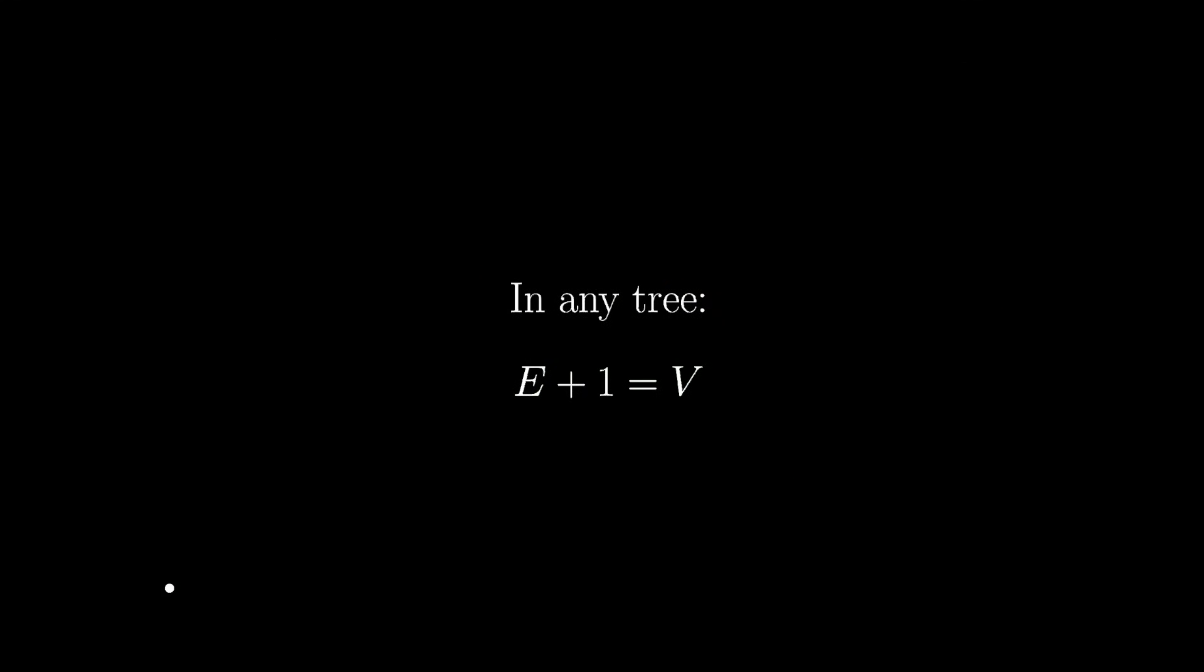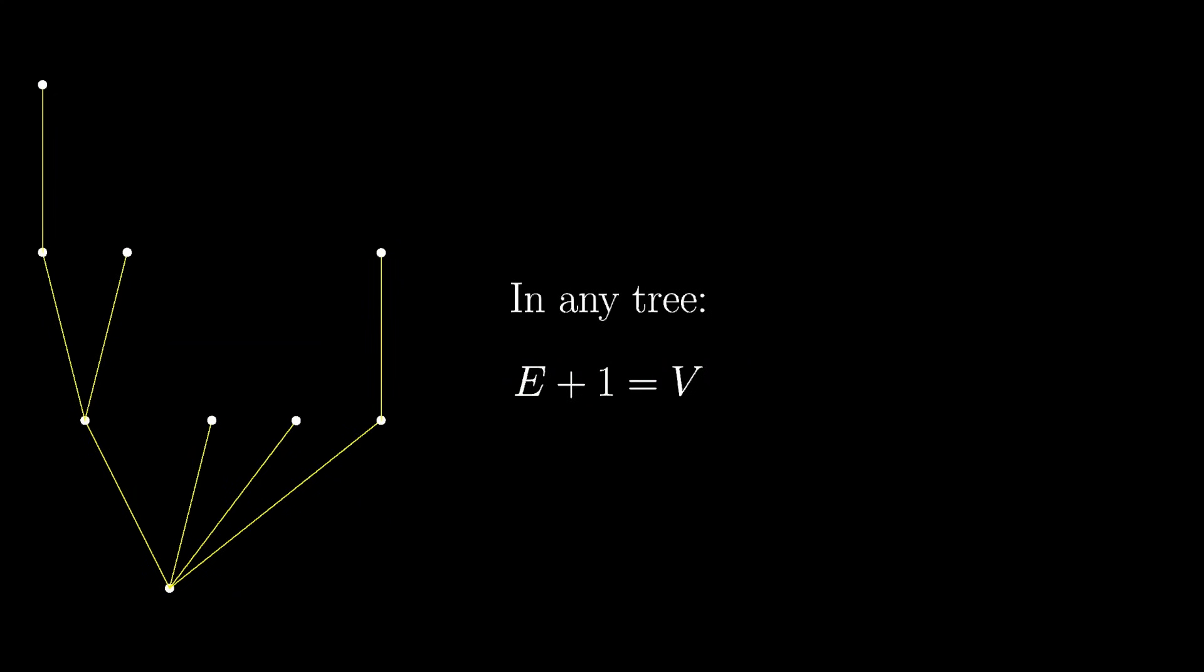Here's the kicker. The number of vertices in any tree is always one more than the number of edges. To see this, note that after you start with the root vertex, each new edge gives exactly one new vertex.